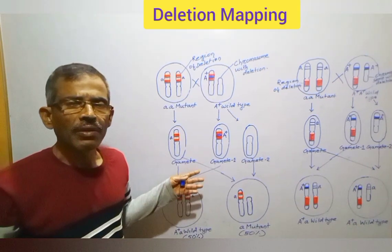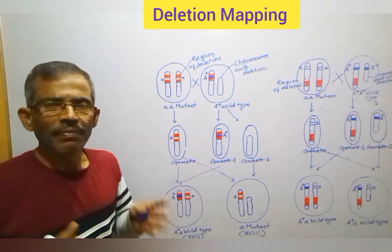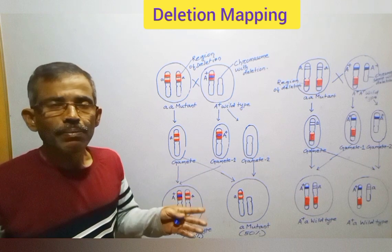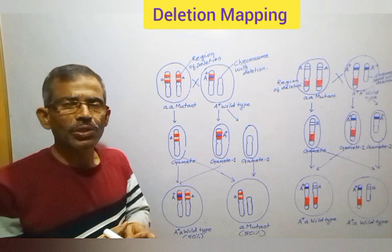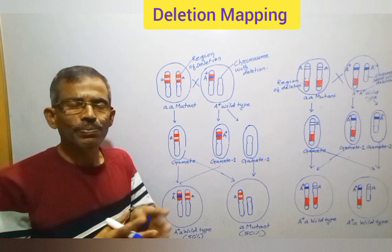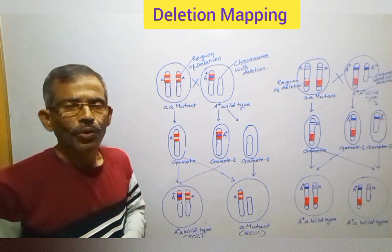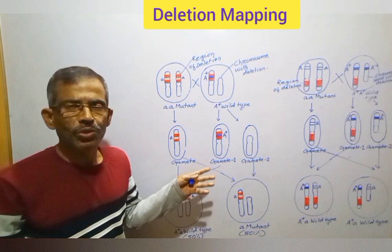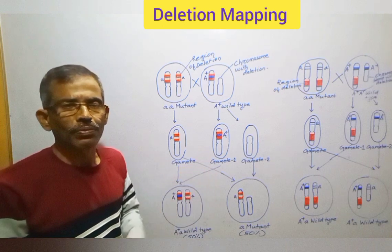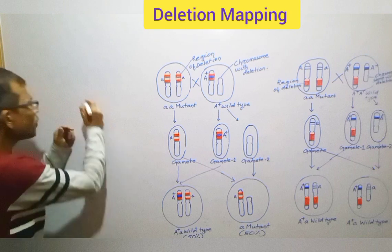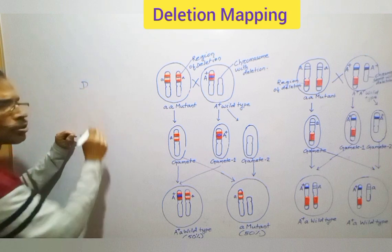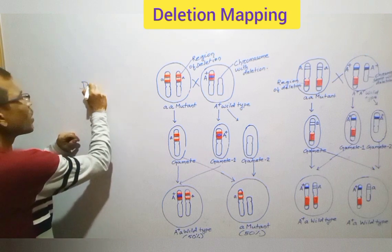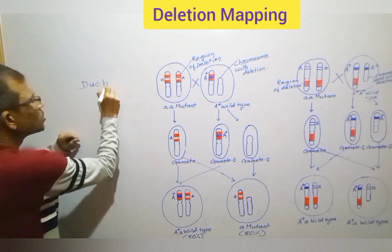So by comparing various deletions that affect different genes, and by studying their association with specific phenotypes, we can determine the location of several genes on a chromosome. Deletion mapping has been used to determine the location of a number of human genes.